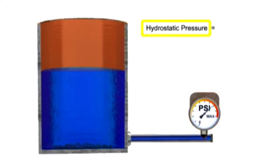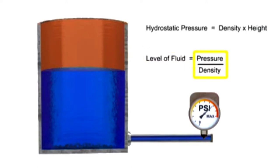To calculate hydrostatic pressure, the density of the material is multiplied by the height of the column. The level of fluid in a column can be determined by dividing the pressure value by the density of the material.